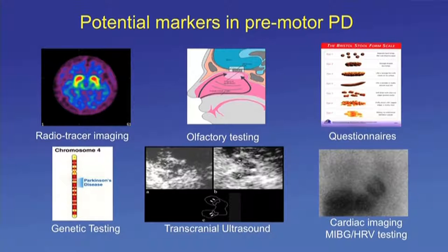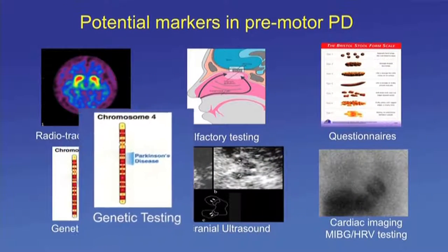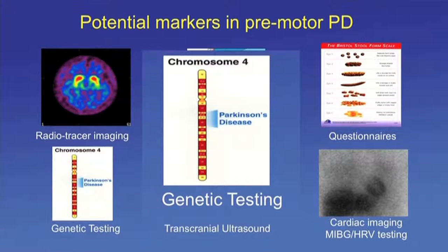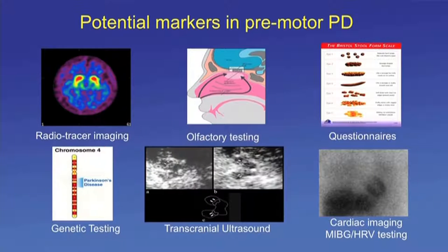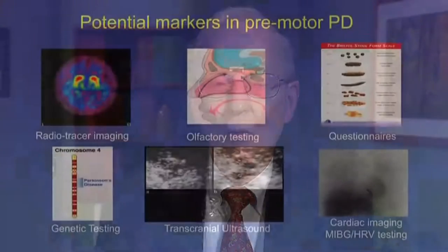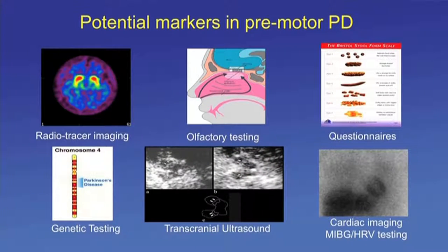Constipation is also a consideration: a Hawaii study in Asian populations showed that having only one bowel movement in three days correlates with a four-fold increase in developing Parkinson's, though 80 percent of those patients did not develop Parkinson's. Genetic testing is very important — we now have significant genes to test for, including LARK2 and others. Transcranial ultrasound is being used but not very often. Cardiac imaging is also used, based on the distal dopamine deficiency in cardiac areas.